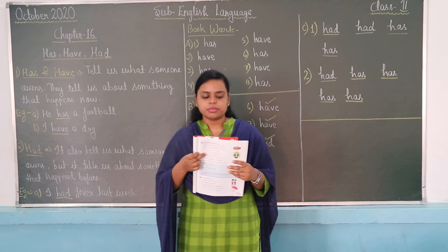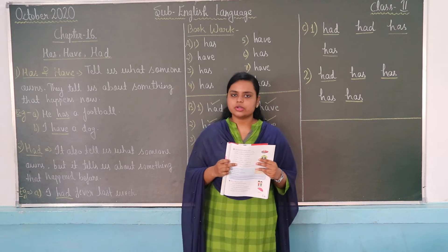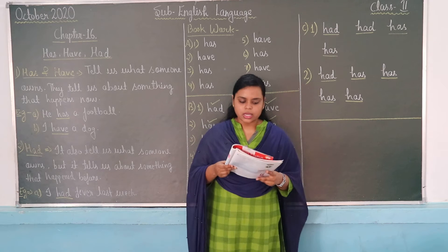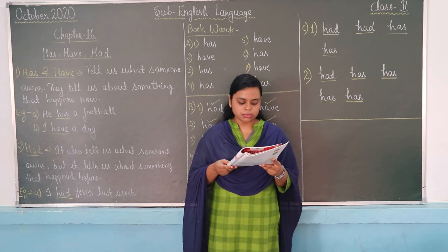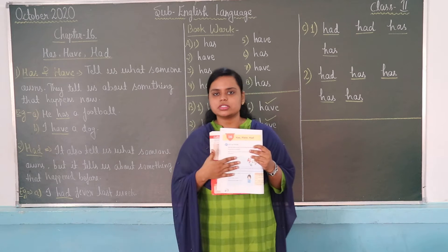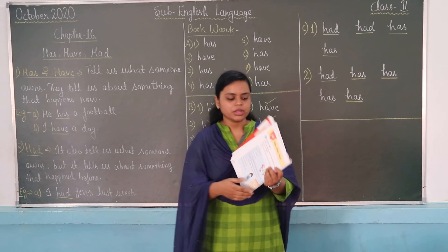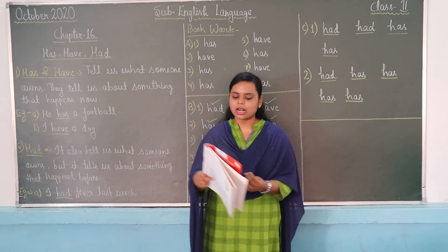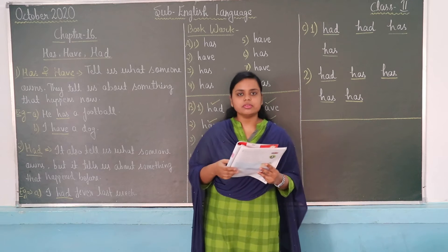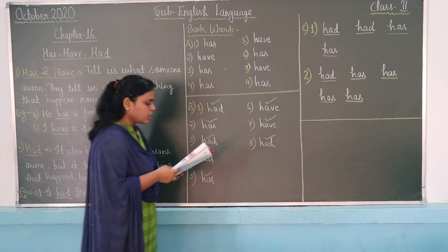First of all, before starting any book work or notebook work, while watching this video, you have to take out your English language book and go to page number 54. On this page, you will find the complete explanation of chapter number 16 — Has, Have and Had. After the explanation, we will move to the notebook work and book work for this chapter.